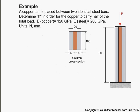A copper bar is placed between two identical steel bars. Determine H in order for the copper to carry half of the load. Let's do some easy things here first.